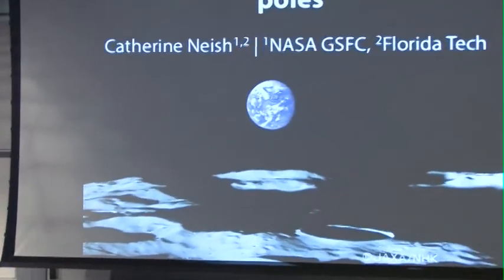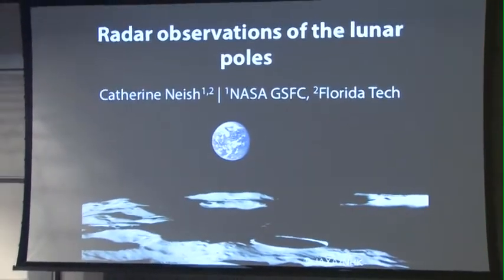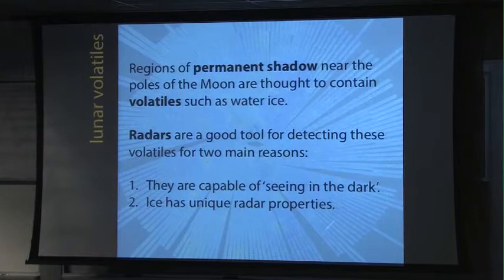Thanks, good afternoon everyone. As Paul said, I'll be giving an overview of radar observations of the lunar poles. I've been heavily involved in the mini-RF instrument on the Lunar Reconnaissance Orbiter, but there have been many different and wonderful radar observations of the lunar poles throughout the decades. This is not a radar image, but it is one of my favorite views of the South Pole — that's Shackleton crater with Earth in the background, taken by the Kaguya spacecraft.